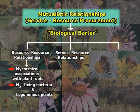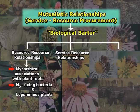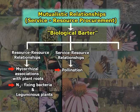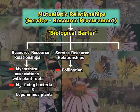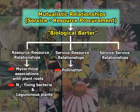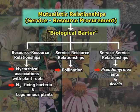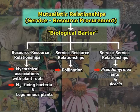The second type is service-resource relationships, which are quite common in nature. One nice example is pollination, in which resources like pollen from plants are traded for the service of pollen dispersal by various animals. The third type is service-service relationships, which are very rarely found. One example is the relationship between ants of the genus Pseudomyrmex and trees of the genus Acacia, in which, in exchange for food and shelter, ants protect acacias from attack by herbivores.